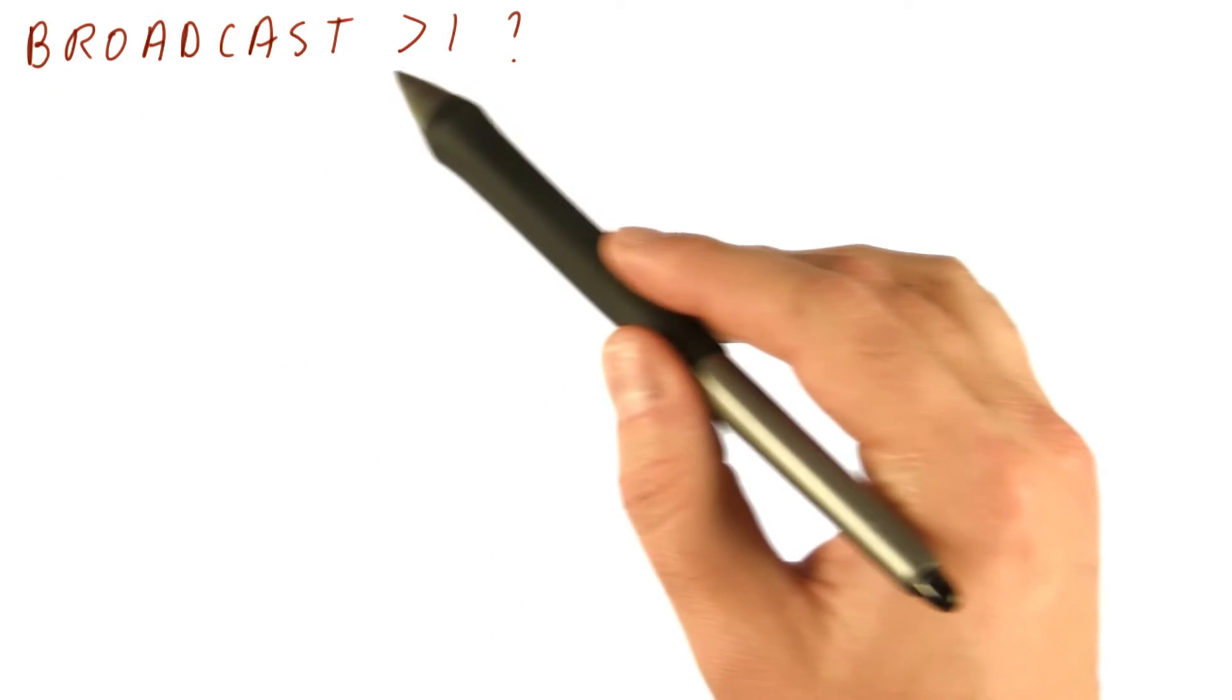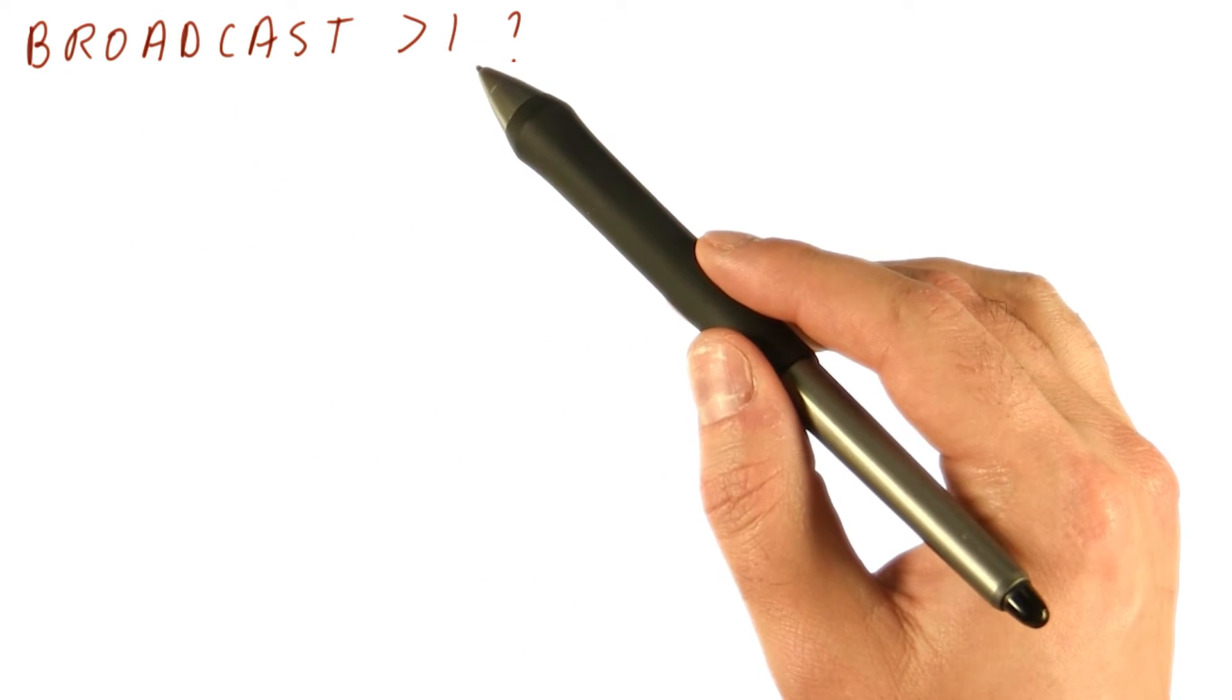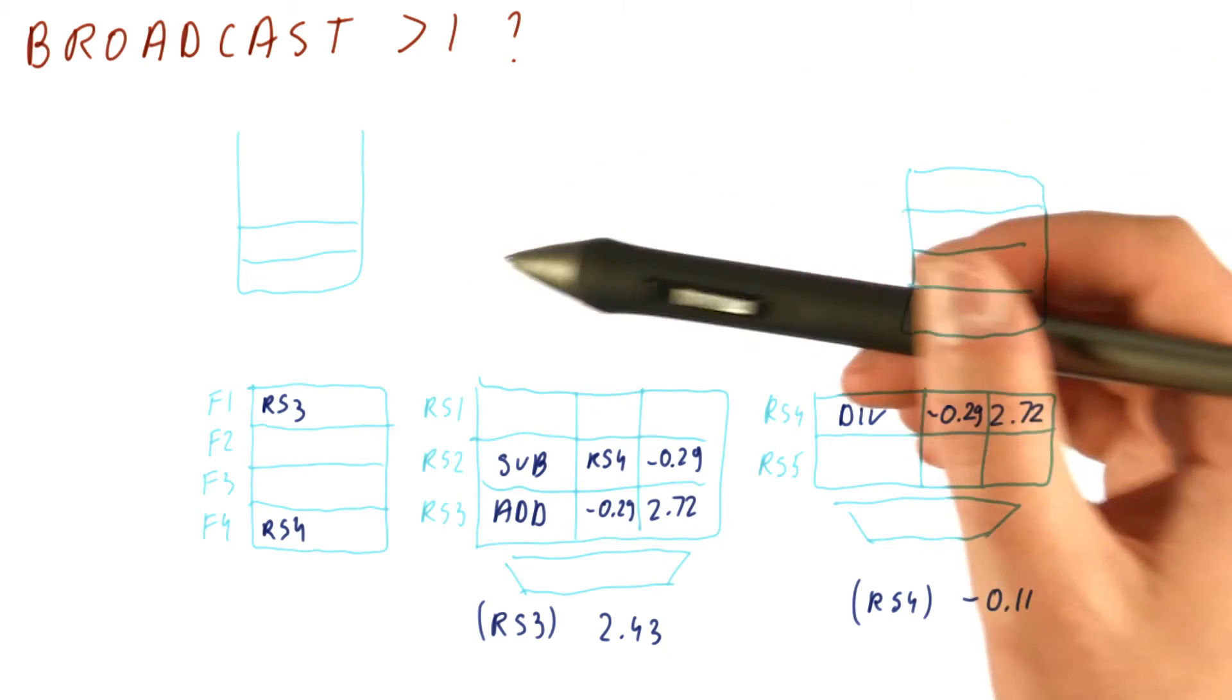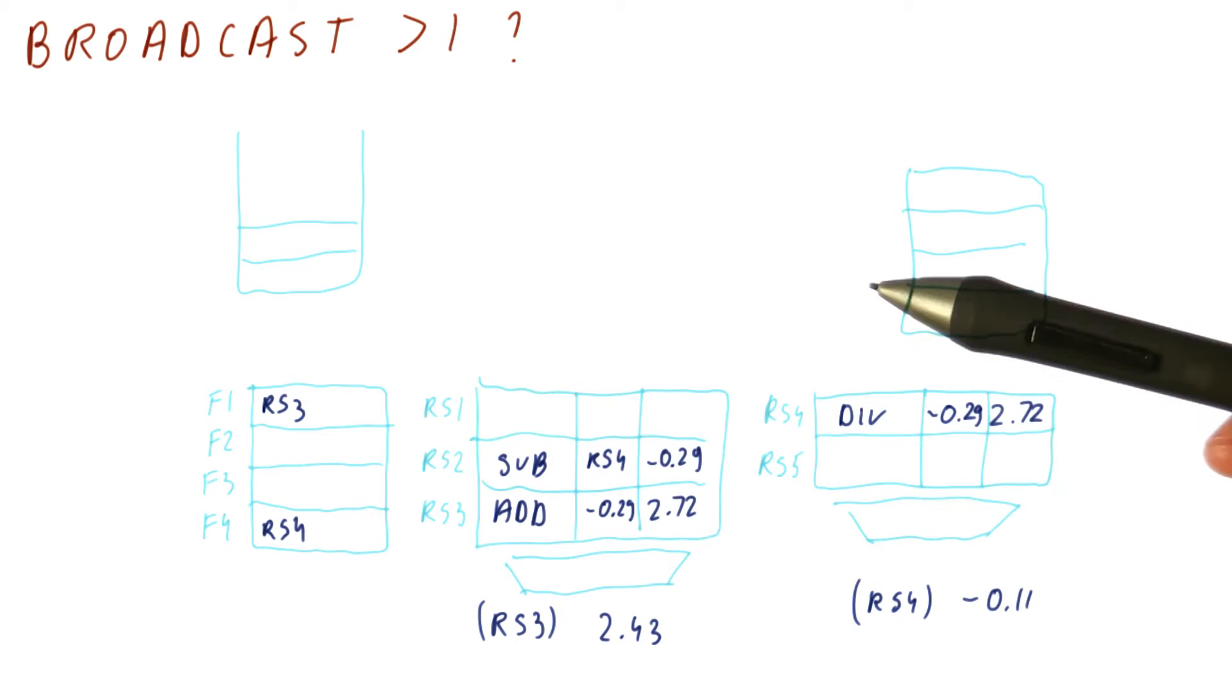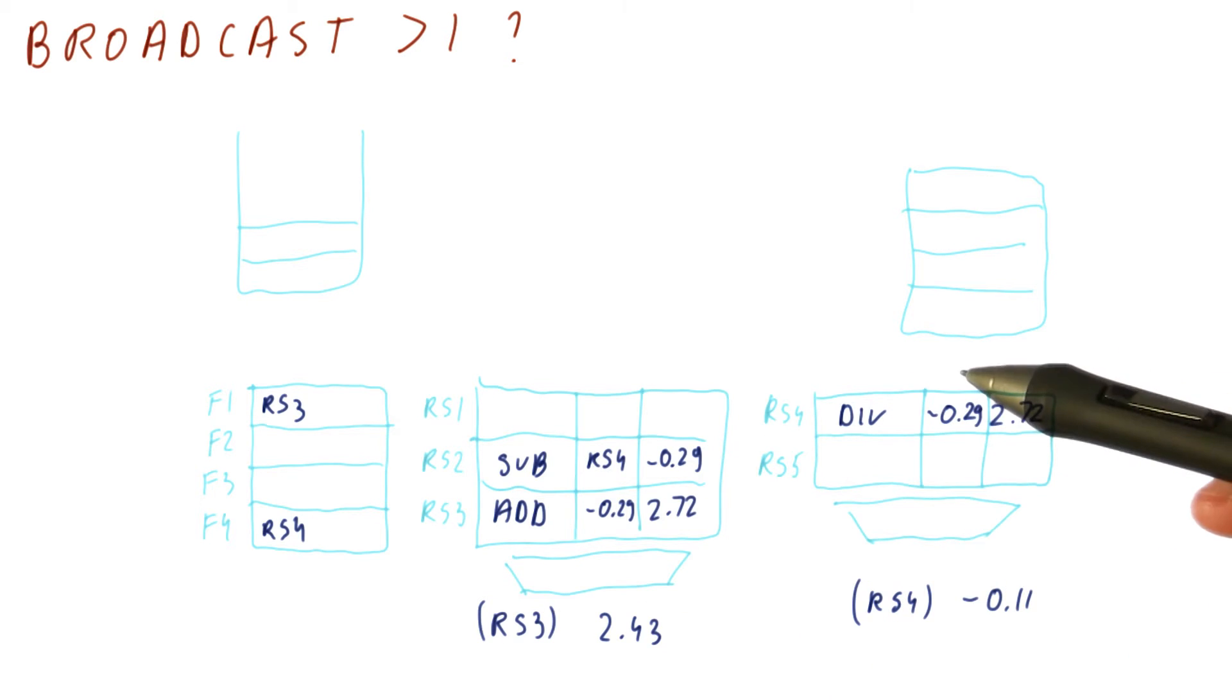The situation we want to consider next is what if we need to do more than one broadcast? So let's say we have this situation: we have some instructions renamed, there is a register file here, we have some reservation stations.